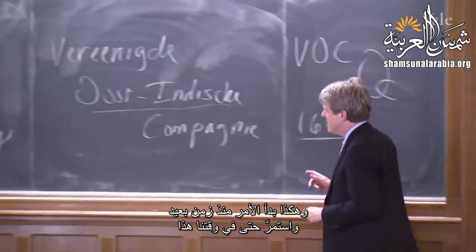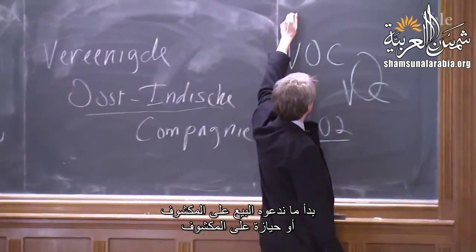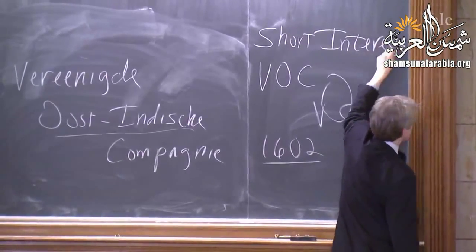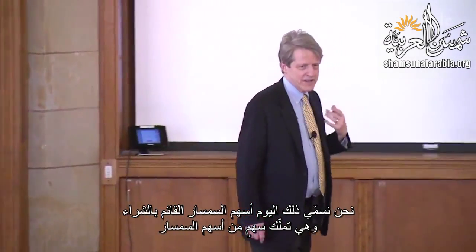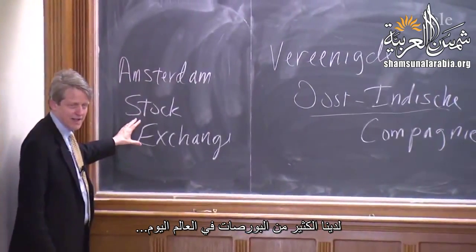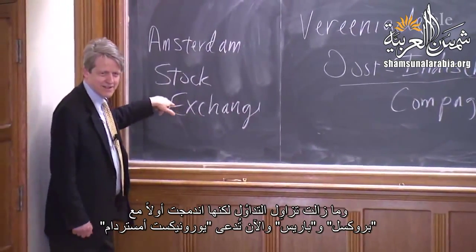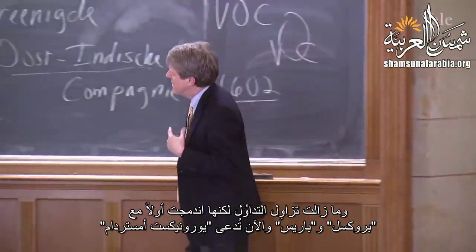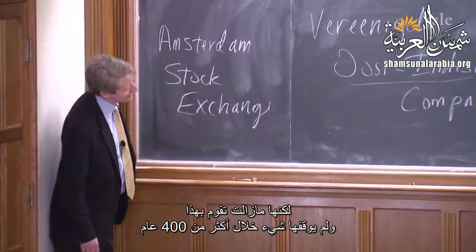And so there began, way back even in this time, what we call short sales, or short interest. It happens when you set up a stock market and you allow what we would call today owning stocks in street name. We have many stock exchanges in the world today — including, by the way, the Amsterdam Stock Exchange, which is the oldest stock exchange in the world. It's still trading, but it has merged — first with Brussels and Paris, and now they're called Euronext Amsterdam. But they're still doing this; nothing stopped them in over 400 years.